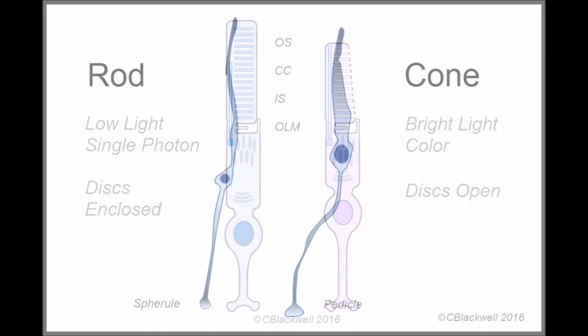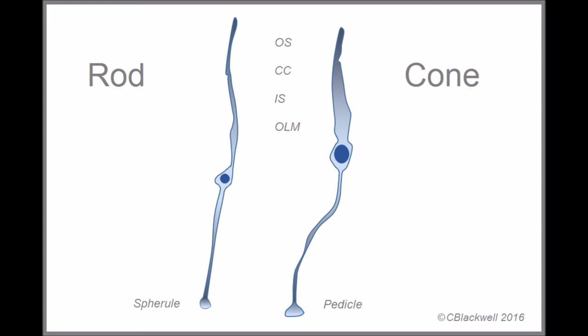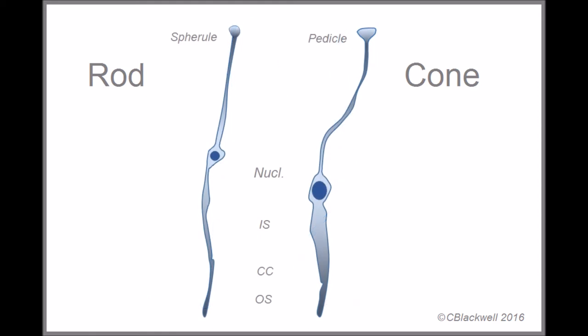If you want to be more anatomically correct, this is what rod and cone cells look like. I have traced these shapes from an electron micrograph. Note the rod synapse is a smaller spherule, while the cone synapse is a relatively larger pedicle. Flipping them over orients them as we will look at them in the retina.